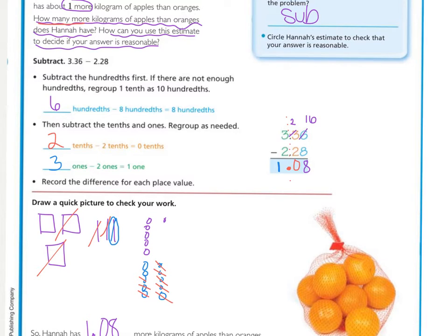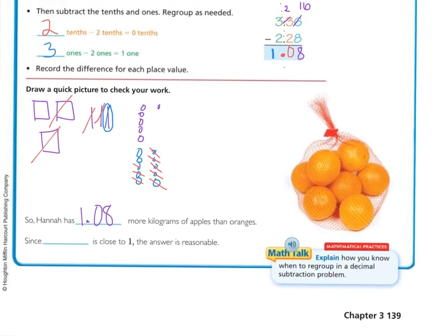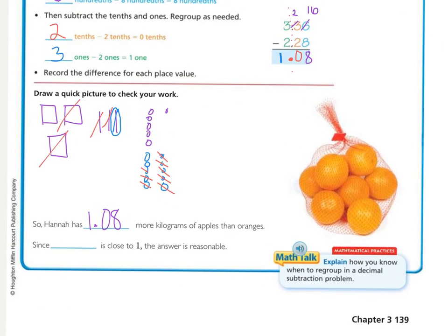But we still have a second question: how can you use her estimate of one to decide if your answer is reasonable? Well, it's really simple — one and eight hundredths is close to one on a number line. So one and eight hundredths is close to one, so the answer is reasonable. That's all you need to say when using an estimate to justify your answer.